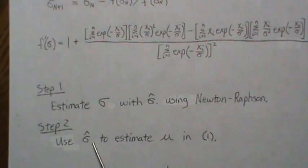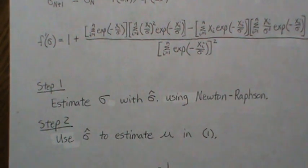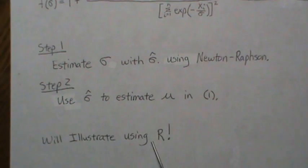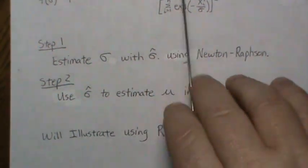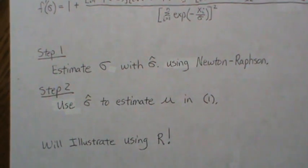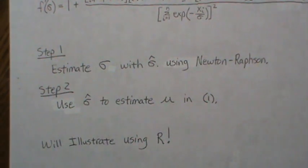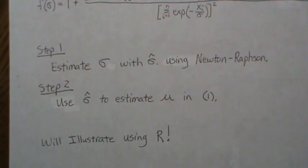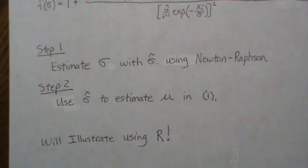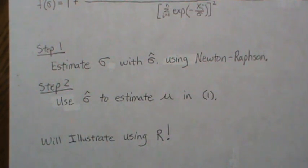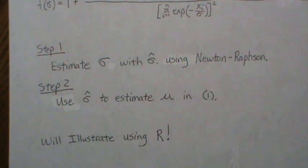We'll then plug σ̂ into the μ̂ formula and compare our Newton-Raphson results with R's built-in uniroot function — of course they'll agree, but it's very useful to have that code on hand. Anyway, that's all for today; hopefully you enjoyed it. Please like the video and subscribe so you don't miss the next one.